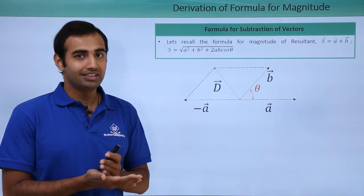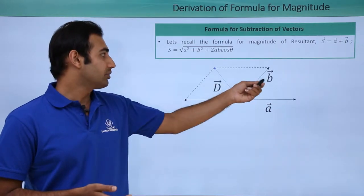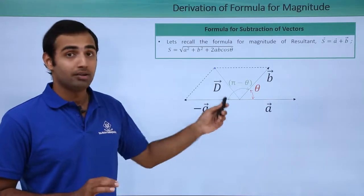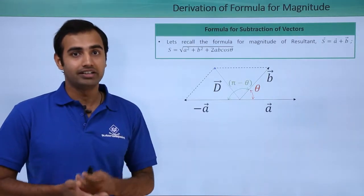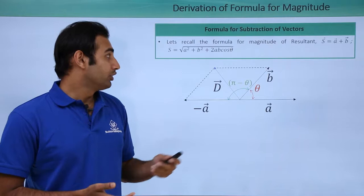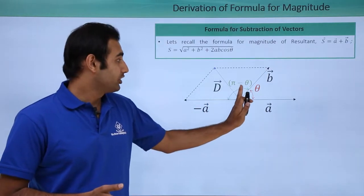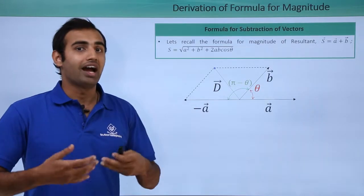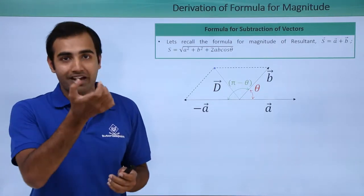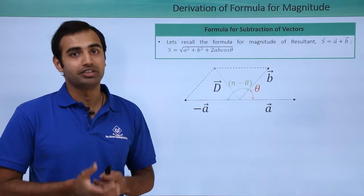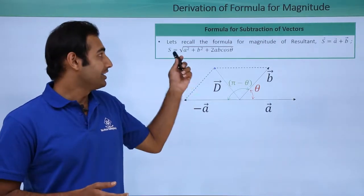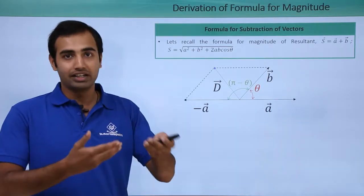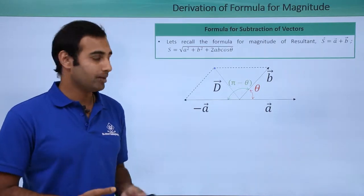Now the interesting thing here is the angle between the b vector and minus a vector is not angle θ anymore, but it is rather π - θ or 180 degrees minus θ. So now if I just totally forget about the right hand side in the diagram, I am left with two vectors added using parallelogram law having an angle π - θ between them. So I can take the same formula and just make the changes into the values that are changing and I will get a new formula.